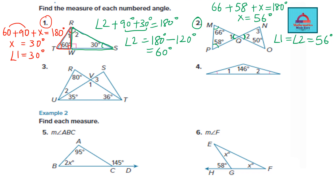Now that we have angle 2, let's find angle 3. Taking the second triangle and adding all three angles: angle 2 (which is 56) + 50 + angle 3 = 180. Simplifying gives angle 3 = 74 degrees. That is how we apply the triangle angle sum theorem.